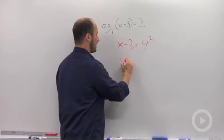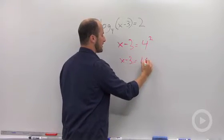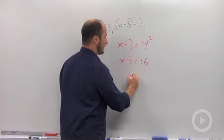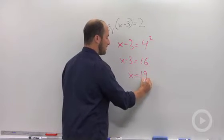4 squared is 16. x minus 3 is equal to 16. Add 3 to both sides leaving us with x is equal to 19.